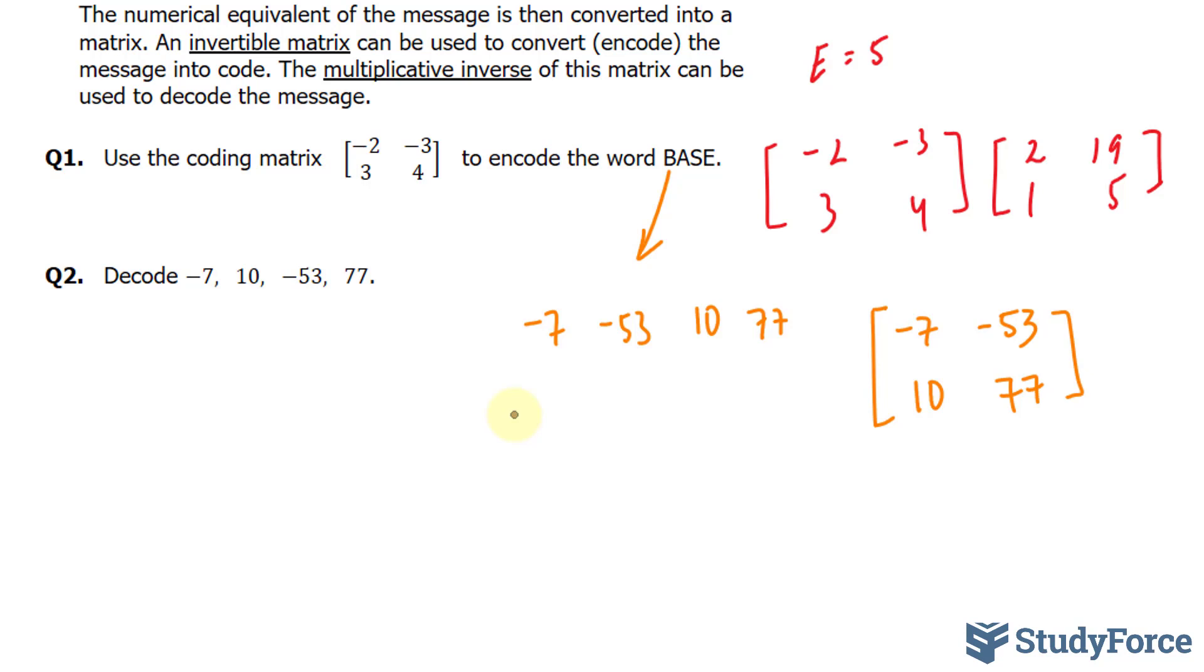Now, in question number 2, they ask us to decode -7, -53, 10, and 77. To do this, what we have to do is take the coding matrix that we used and find its inverse. And to find the inverse of a 2 by 2 matrix isn't hard to do. You start off by finding its determinant.